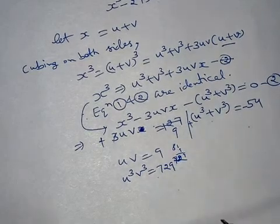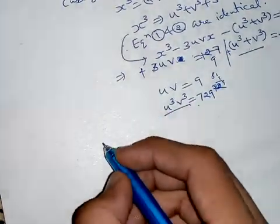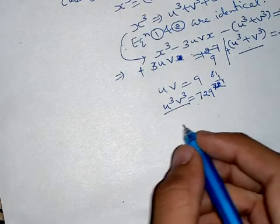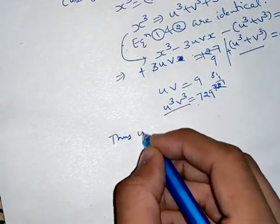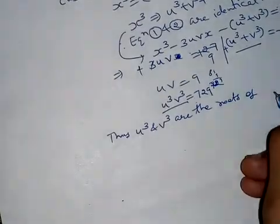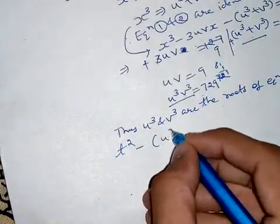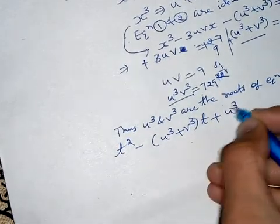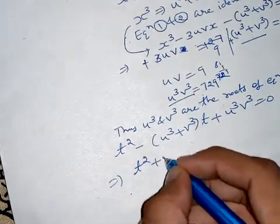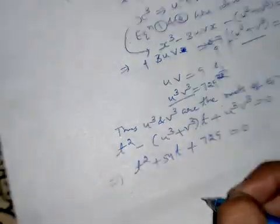Now u cubed · v cubed equals (uv)³ equals 9³ equals 729. So u cubed and v cubed are roots of: t squared minus (u cubed plus v cubed)·t plus u cubed·v cubed equals 0, which is t squared plus 54t plus 729 equals 0. This factors as (t plus 27) whole squared equals 0. So t equals minus 27, meaning u cubed equals minus 27 and v cubed equals minus 27.